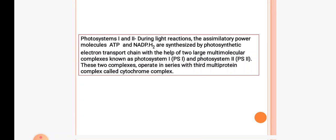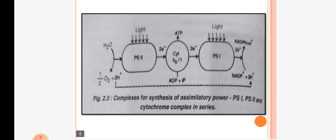During light reactions, the assimilatory power molecules ATP and NADPH2 are synthesized by the photosynthetic electron transport chain with the help of photosystem 1 and photosystem 2. These two complexes operate in series with a third multiprotein complex called the cytochrome complex. This figure shows the complexes for synthesis of assimilatory power — PS1, PS2, and cytochrome complex — in series.